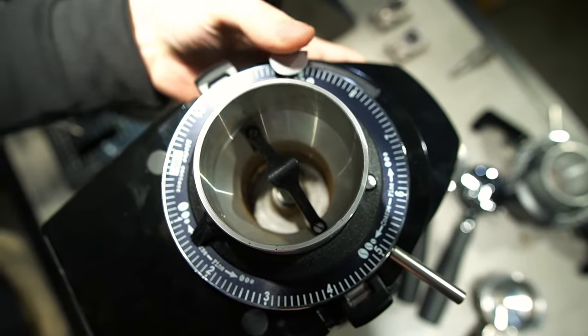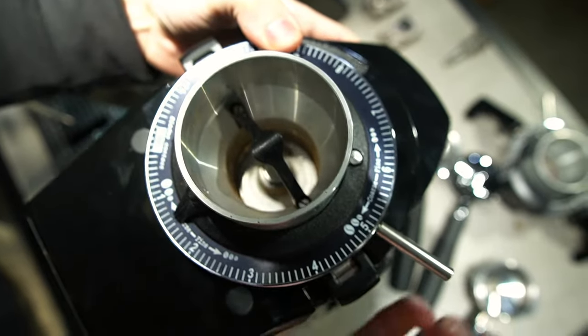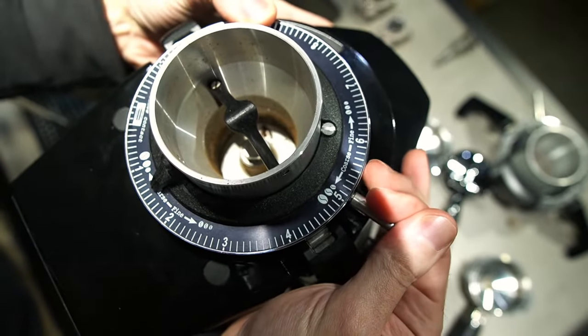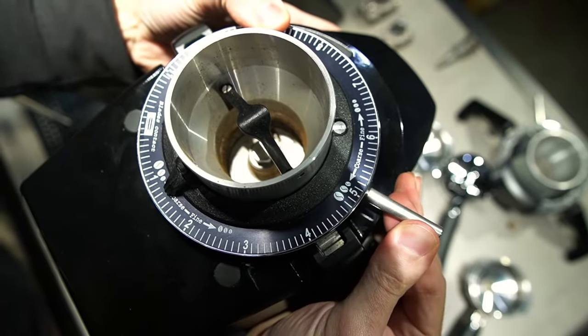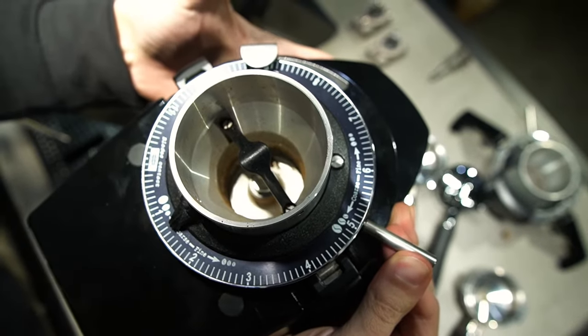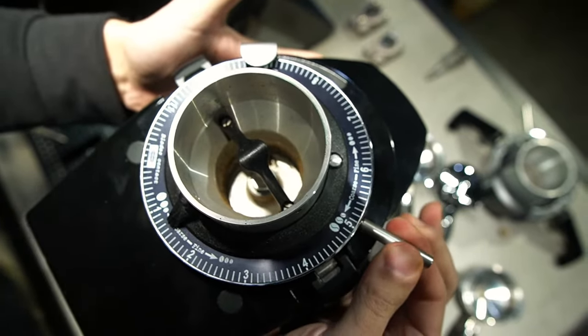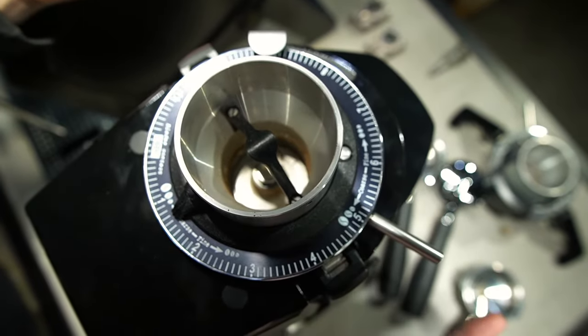All you do to adjust it is simply press this down, then using your key adjust it coarser or finer while holding it down, then release it and it's locked in that place. And that's it.